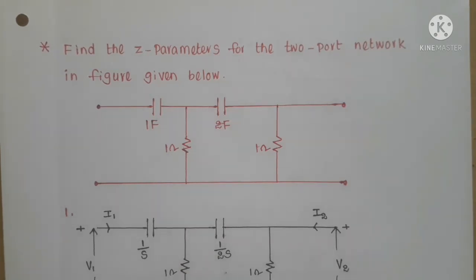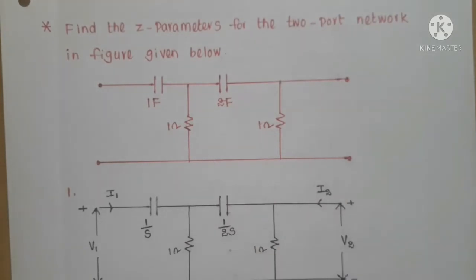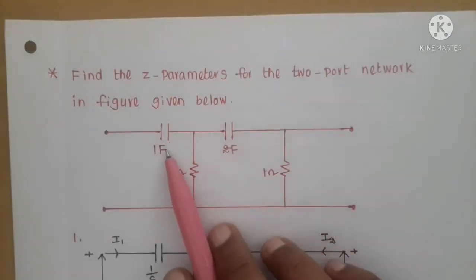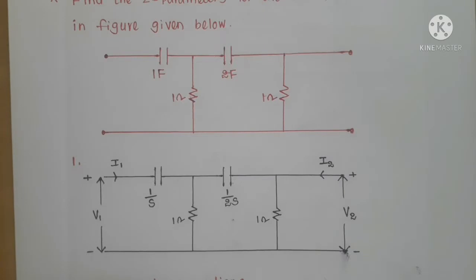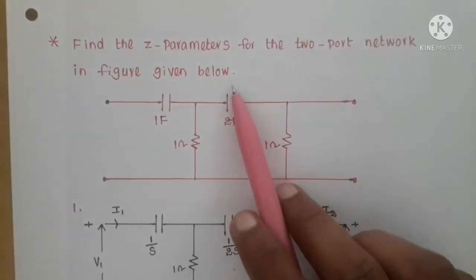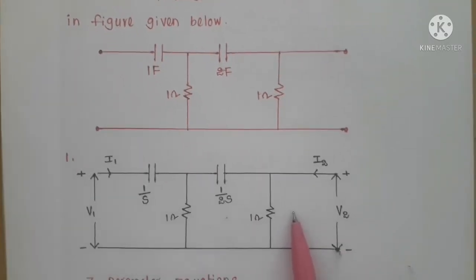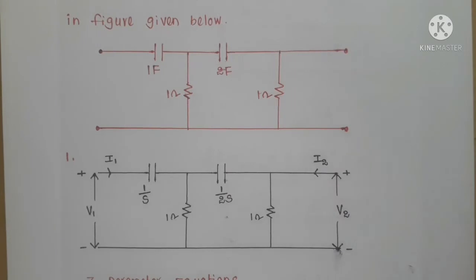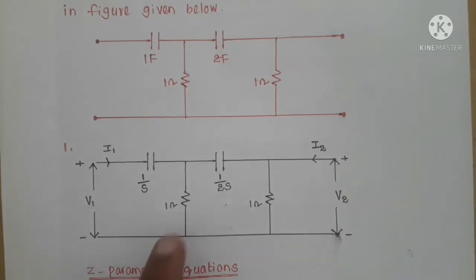The immediate step for model three is to write the entire network in the S-domain. For a capacitor the impedance is 1/sC, so the one farad capacitor becomes 1/s ohms, and the two farad capacitor becomes 1/(2s) ohms. Resistor values remain unchanged, and v1, i1, v2, i2 are the port voltages and currents. This gives the S-equivalent circuit.